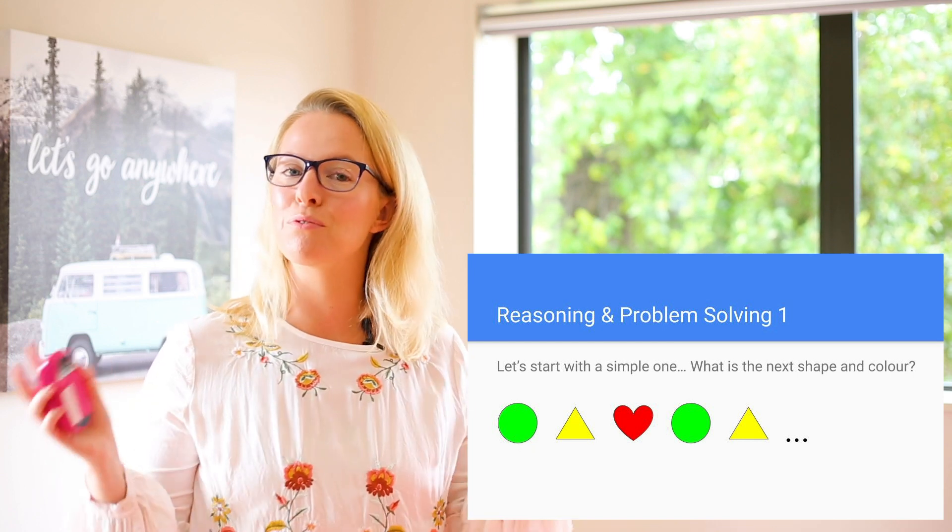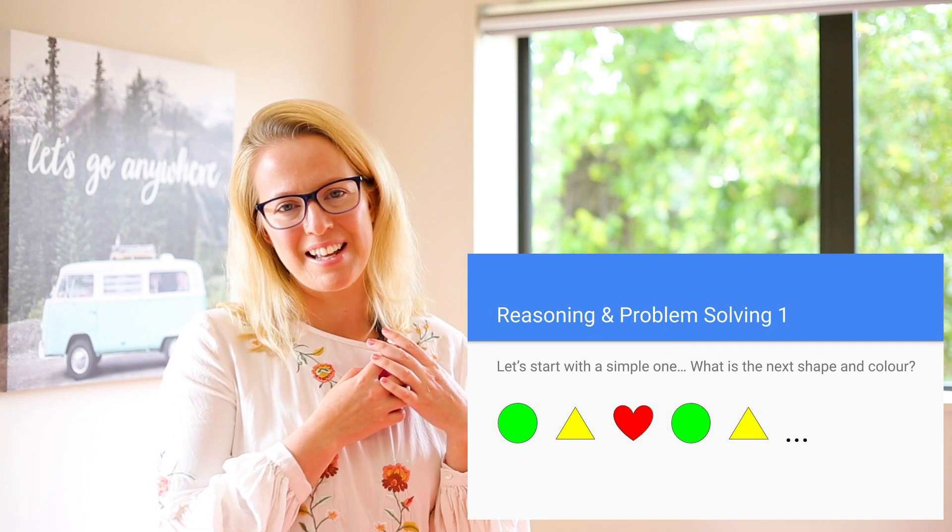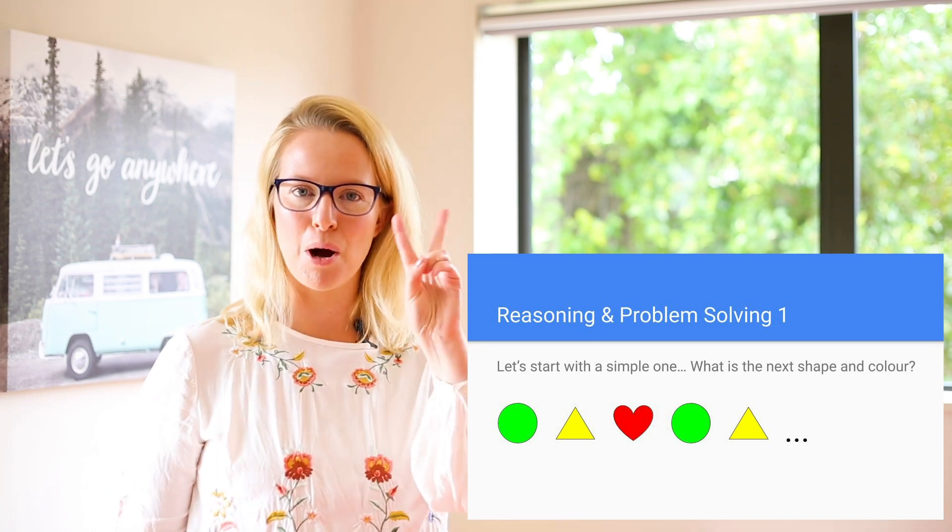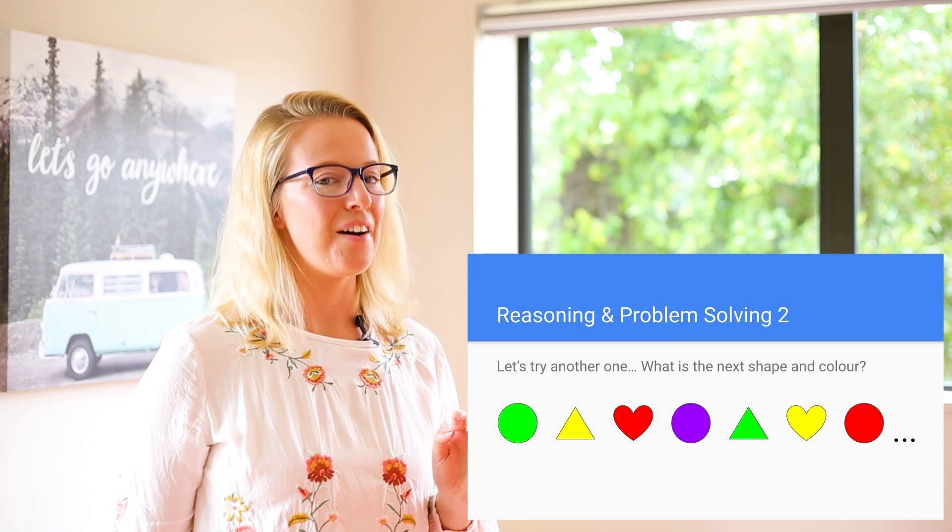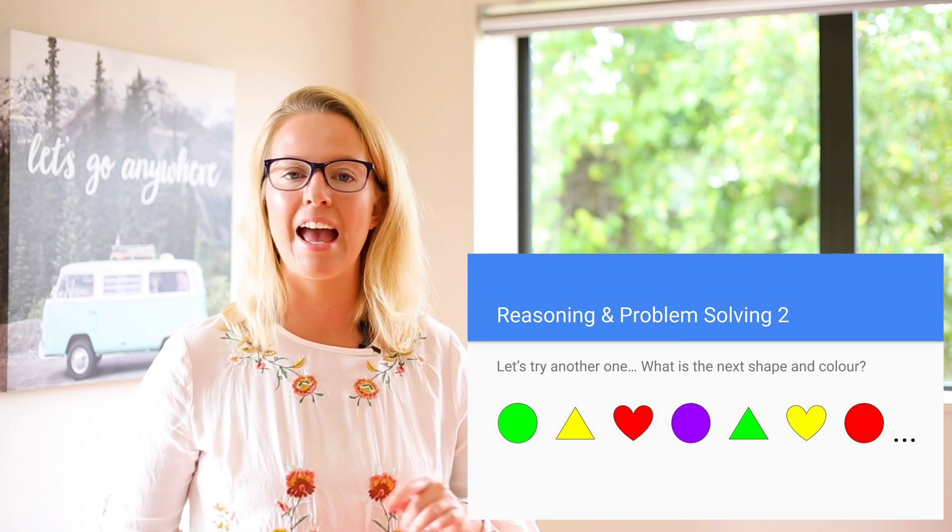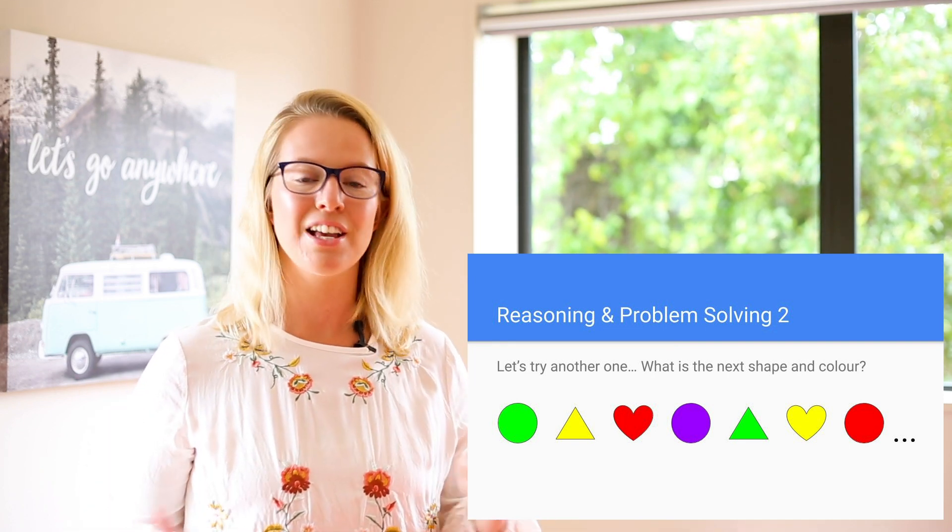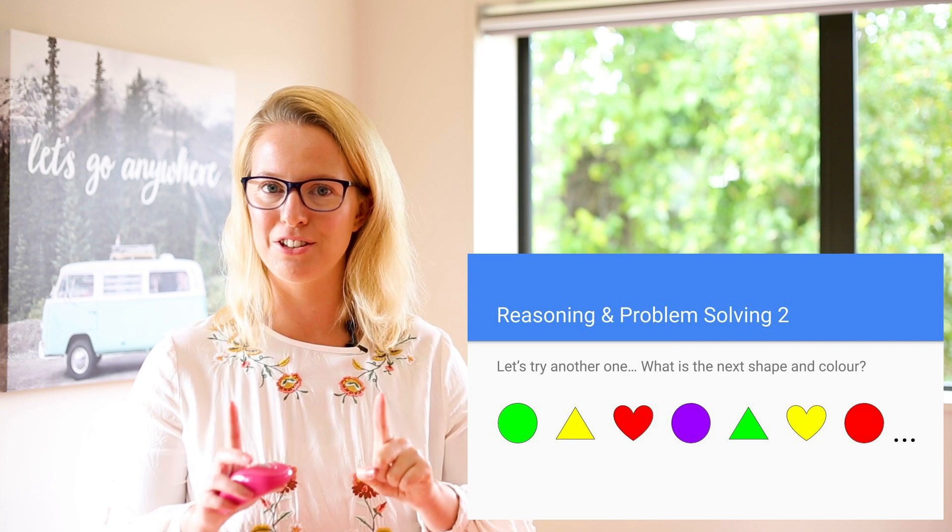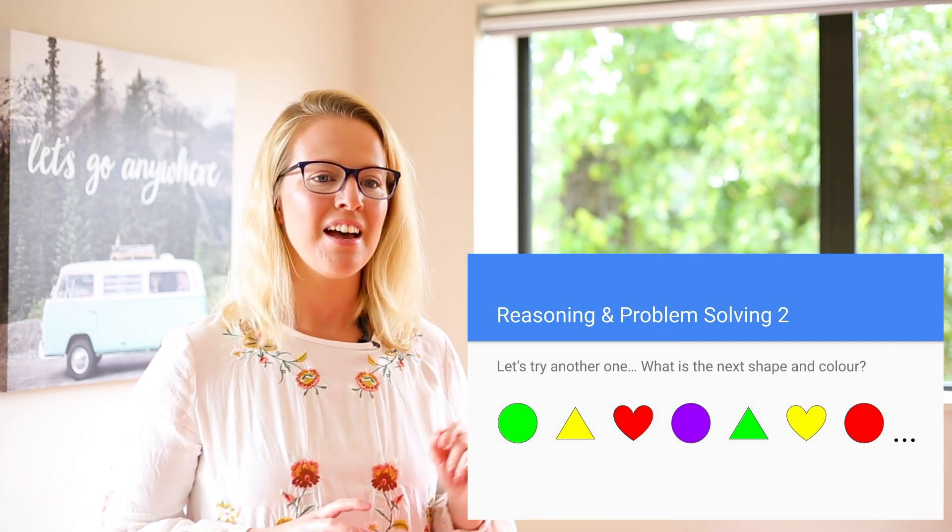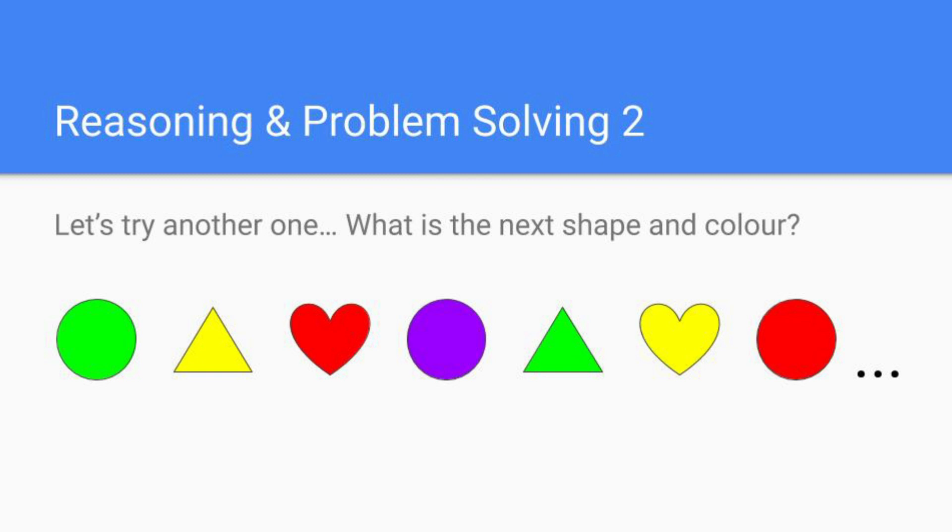All right, let's move on to problem solving number two. Okay, I've got the same shapes but I've added an extra colour and let's see what the question is asking us. It's always good to read the question so you don't just guess at what you're doing. Okay, what is the next shape and colour? So we've got green, yellow, red, purple, green, yellow, red. All right, you can pause the video here and then you can try and figure it out and come back when you've got the answer.